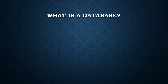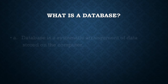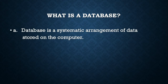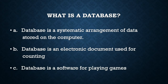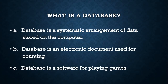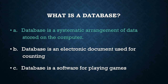Can you answer this question on your own? What is a database? A: A database is a systematic arrangement of data in a computer system. B: A database is an electronic document used for counting. C: A database is a software for playing games. Pause the video, write out your answer in a jotter, and then play. If you chose A, you are correct. A database is a systematic arrangement of data in a computer system.